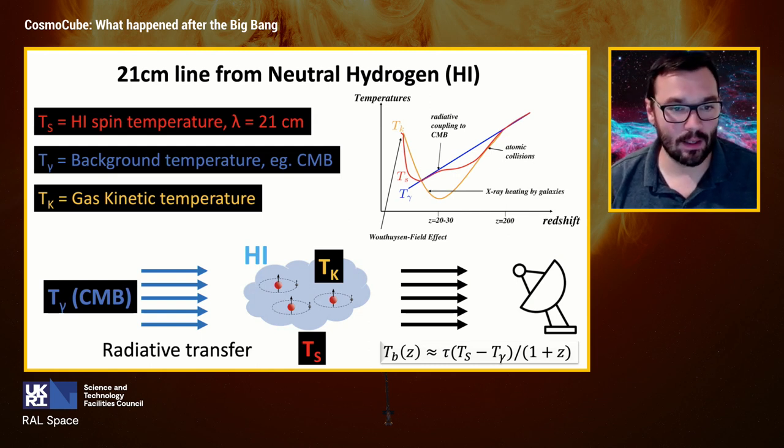However, what we can observe is the radio emission from that neutral gas and use it to study the interplay between the gas and the new celestial objects. In neutral hydrogen, there are two energy levels resulting from the magnetic interaction between the electron and proton spins. When the relative spins change from parallel to antiparallel, a photon is emitted at a wavelength of 21 centimeters with radiation temperature Ts, which is in red in this slide. 21 centimeter cosmology, which is the field of study I work on, is in essence a radiative transfer problem.